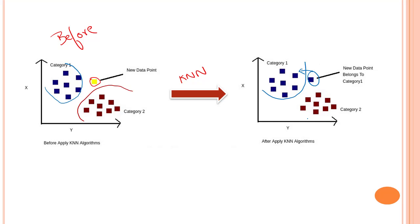The KNN algorithm assumes the similarity between the new case data and available cases, and puts the new cases into the category that is most similar to the available categories. In simpler words: whenever I have a new data point, I put it into the nearest or most similar category. KNN algorithm stores all the available data and classifies a new data point based on that similarity.